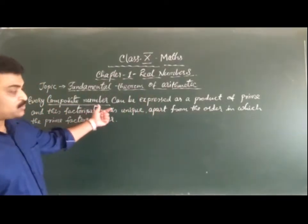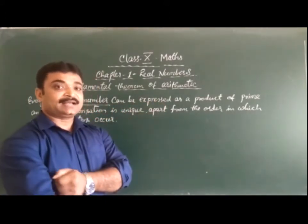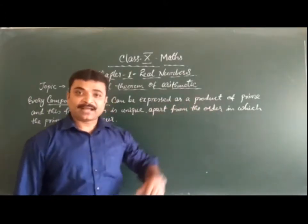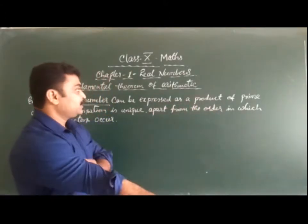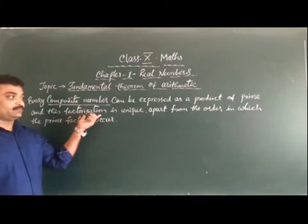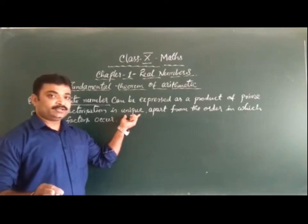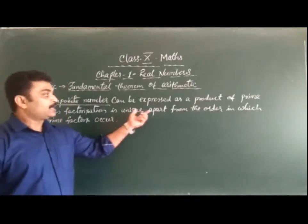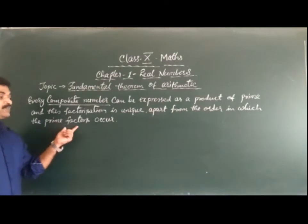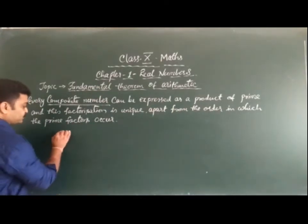In the statement, every composite number can be expressed — that is, can be factorized — as a product of prime numbers, and this factorization is unique apart from the order in which the prime factors occur. Let me give you one example.